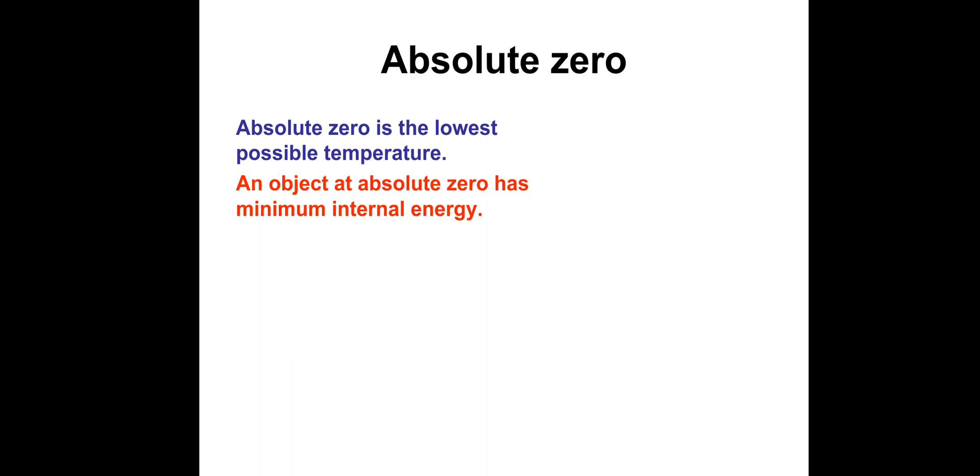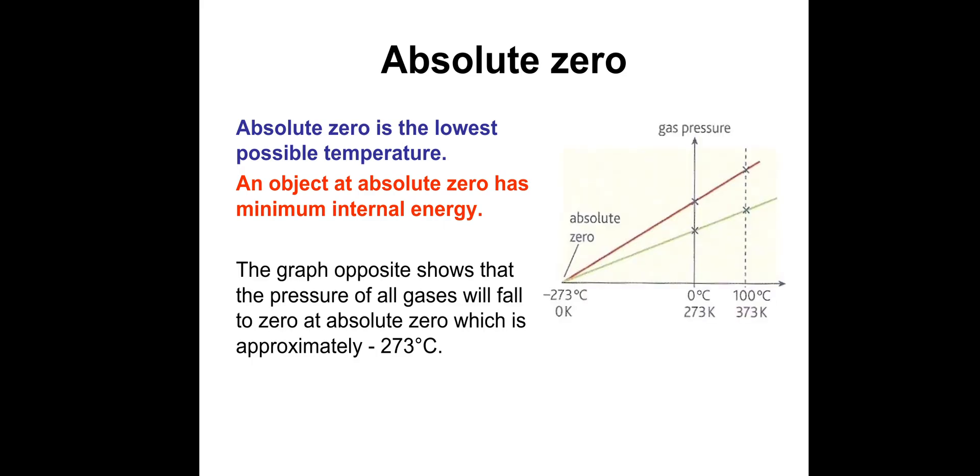Absolute zero. You may already know what this is. Absolute zero is the lowest possible temperature in the entire universe. An object at absolute zero has minimum internal energy. The graph opposite shows that the pressure of all gases will fall to zero at absolute zero. Absolute zero has never actually been hit by scientists; we get just above absolute zero.